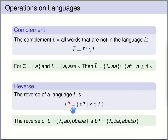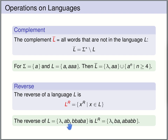We can also compute the reverse of an entire language. The reverse of a language L is the reverse of each of the words in L. For instance, if L consists of the words lambda, AB, BB, ABA, then the reverse of L contains: the reverse of lambda is lambda, the reverse of AB is BA, the reverse of BB is BB, and the reverse of ABA is ABA.